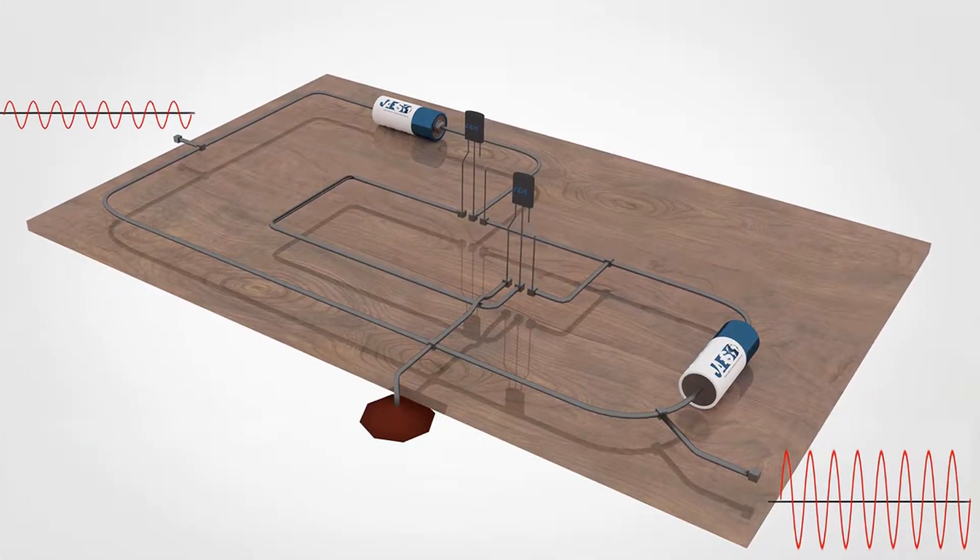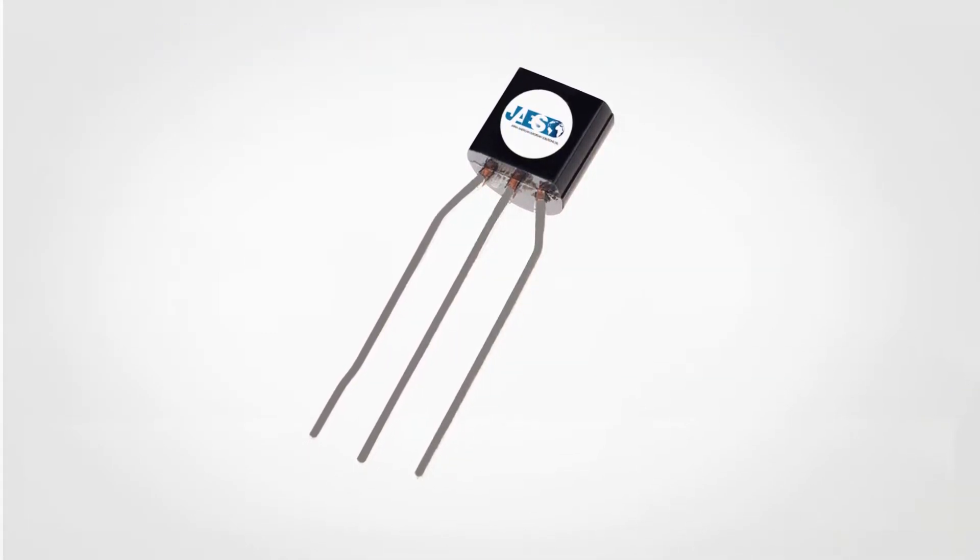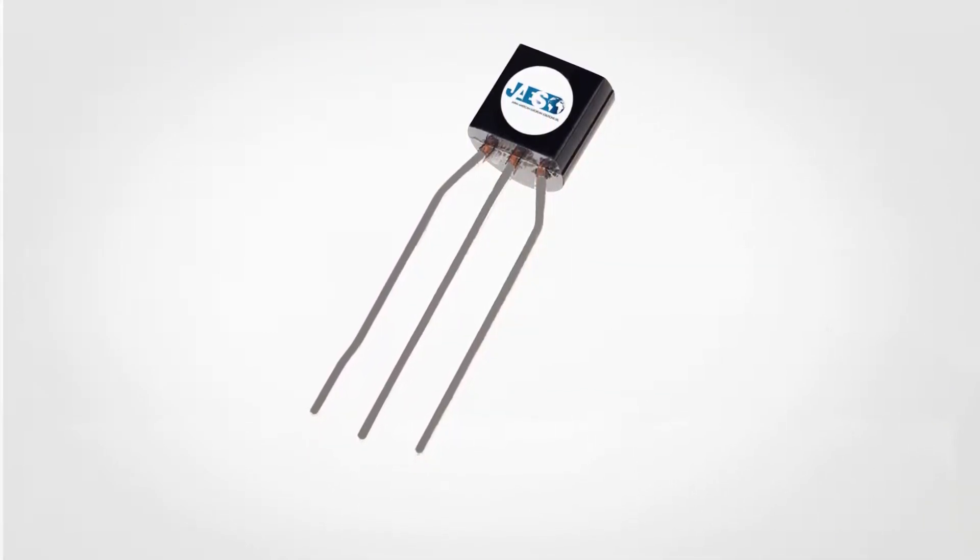In this video, we will focus on the bipolar junction transistor and on its applications, which as you can see, has three terminals, namely the emitter, the collector, and the base.